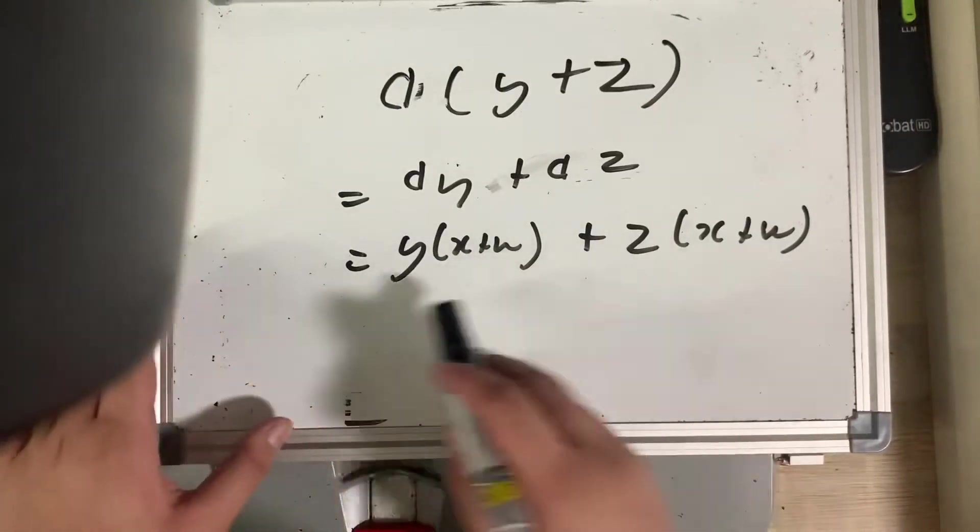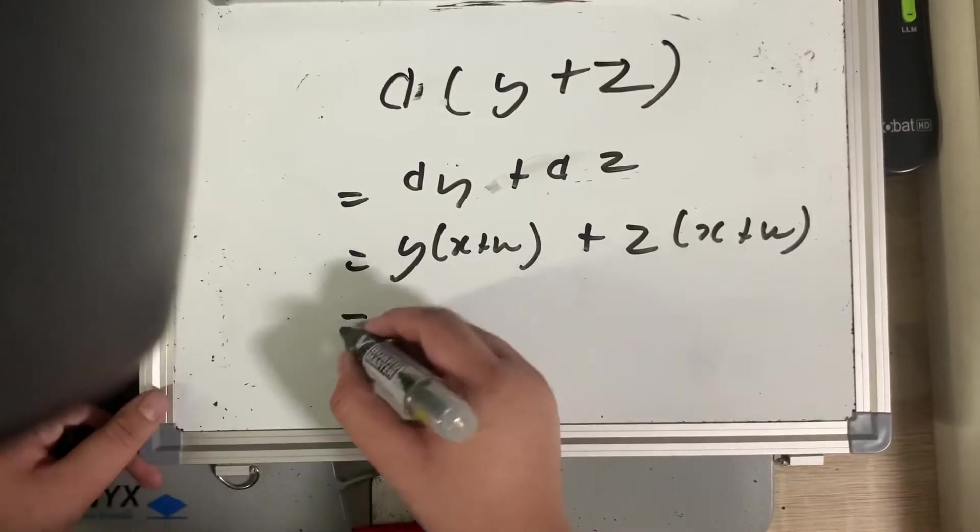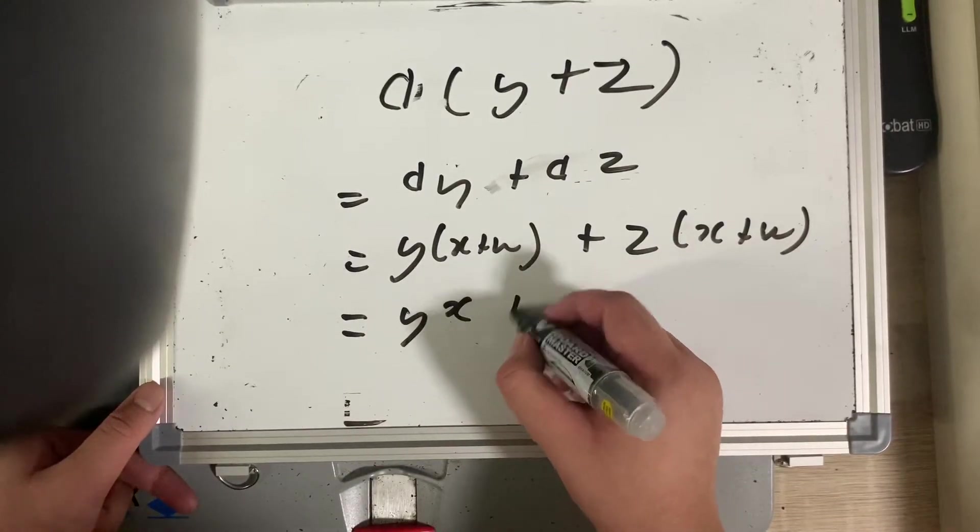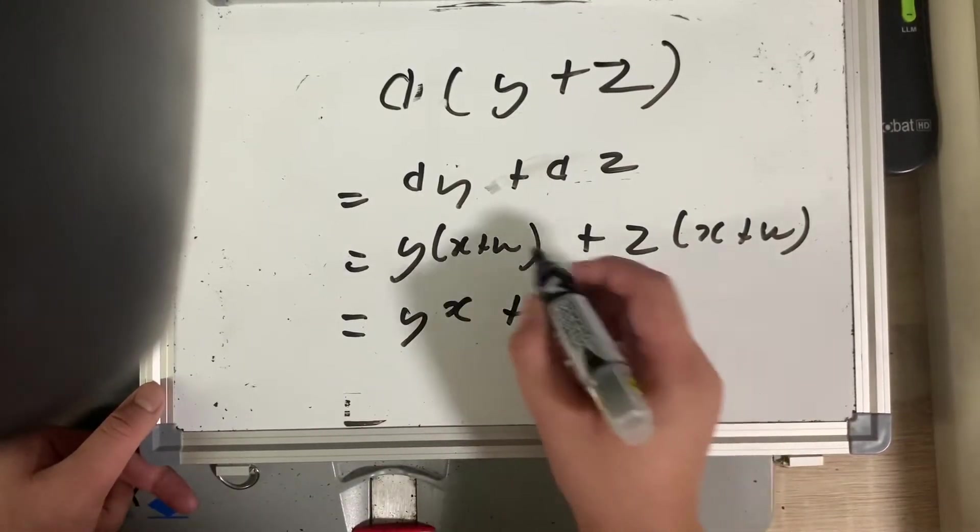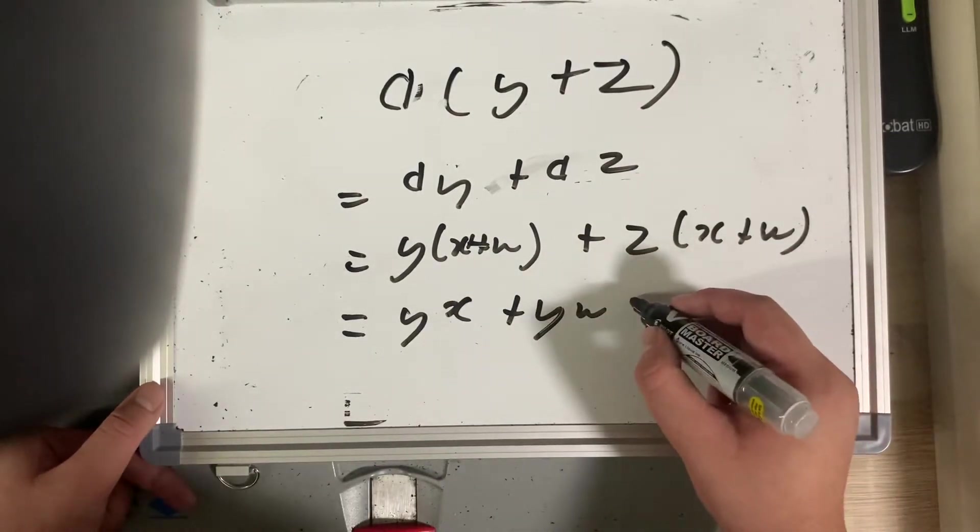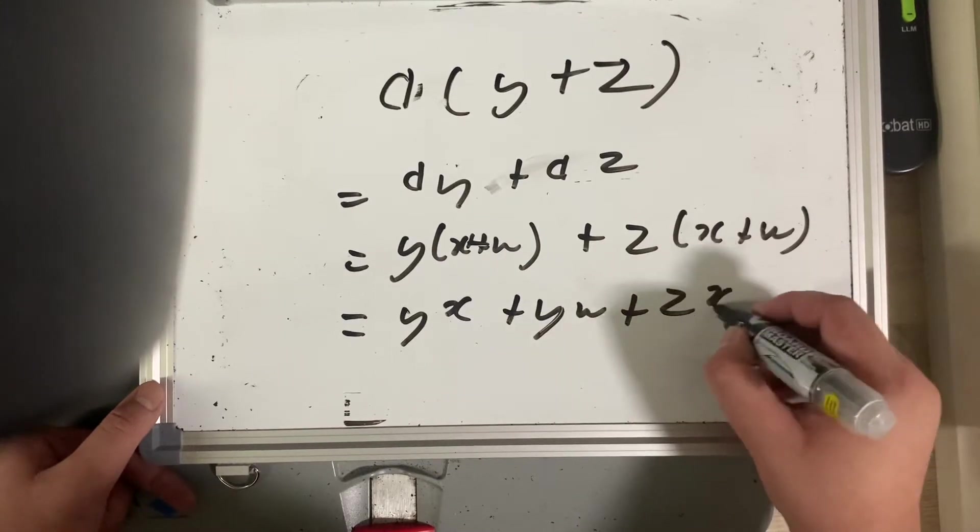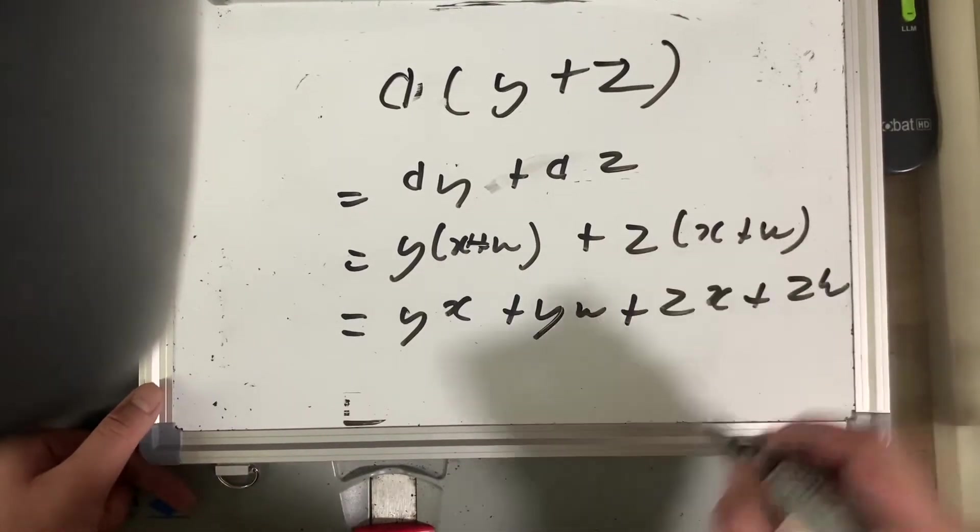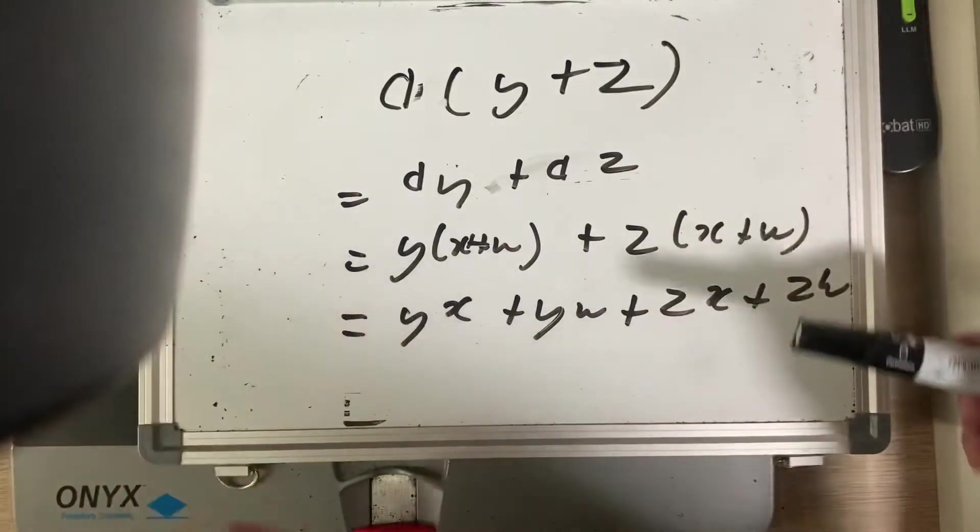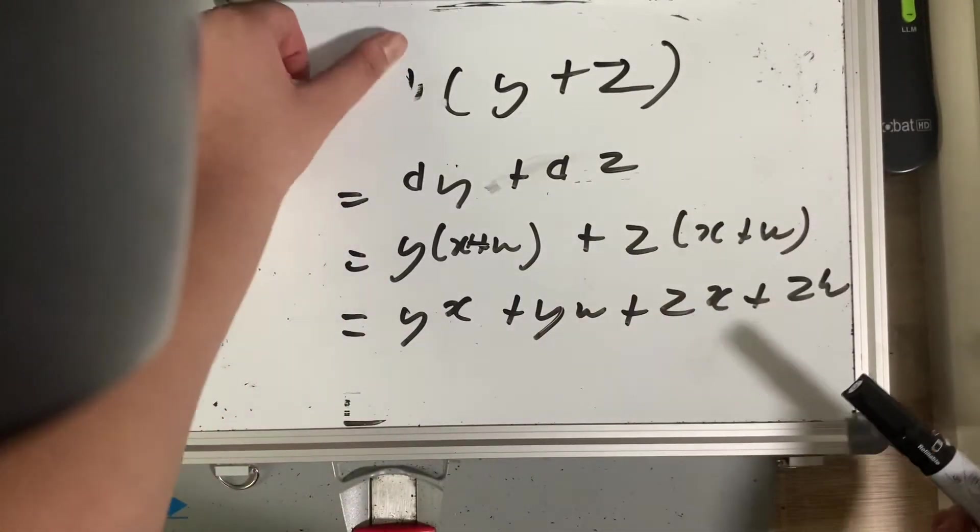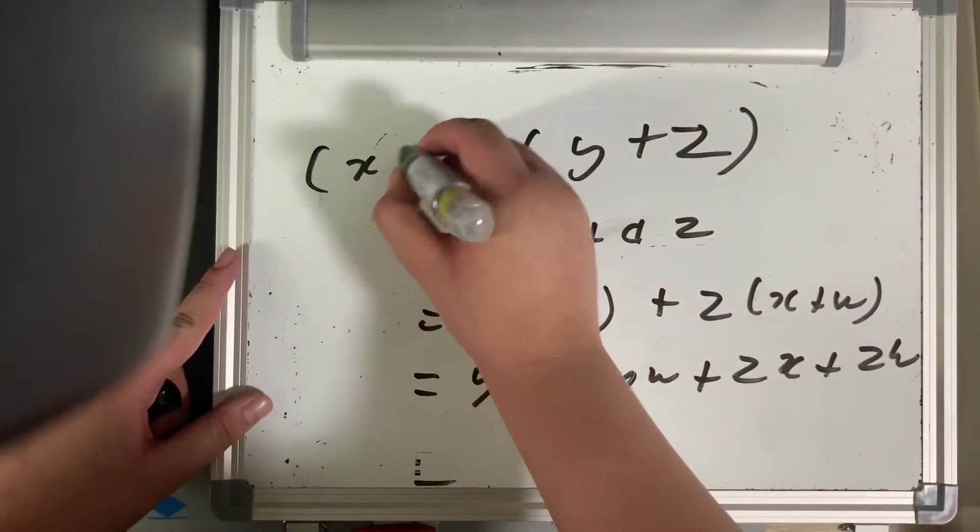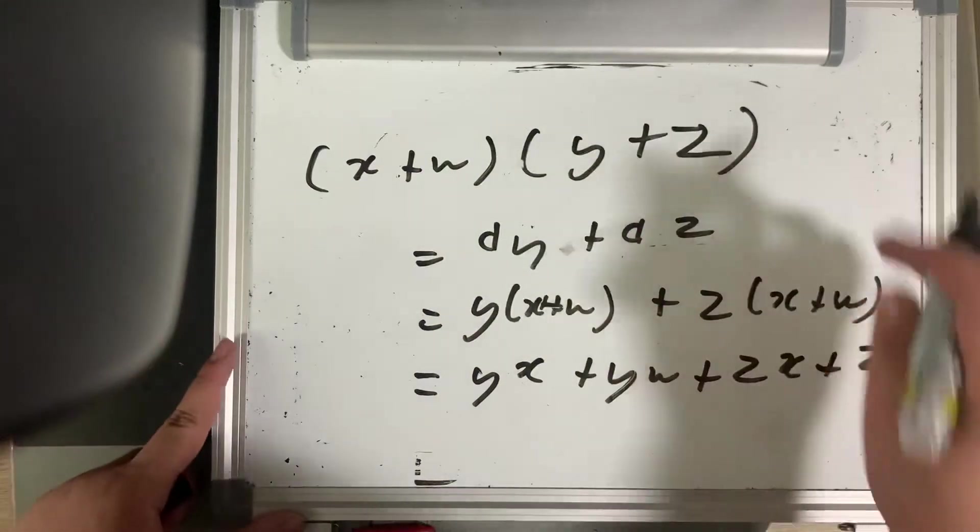All I'm going to do is apply the distributive property to both of these terms. Then I get yx plus yw, plus zx plus zw. That's essentially a way to expand the multiplication, the product of x plus w multiplied by y plus z.